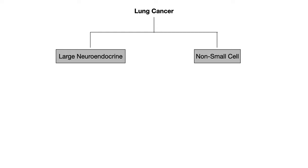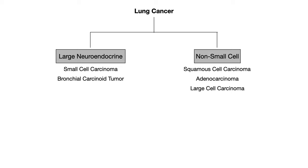There are other ways to categorize lung cancers, but for the purposes of USMLE or COMLEX, this really doesn't matter at all. I'm just putting this here for completeness. The cancers we're going to talk about in this video are: in the large neuroendocrine category — small cell carcinoma and bronchial carcinoid tumors; and in the non-small cell category — squamous cell carcinoma, adenocarcinoma, and large cell carcinoma.